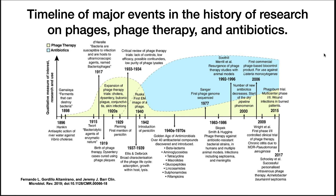I want to end this lecture talking about two interesting trends with viruses. Shown here is the timeline of major events in the history of research on phages, phage therapy, and antibiotics. Background curves represent a qualitative measure of the overall interest, research, and use of phage therapy in yellow and antibiotics in blue — showing how the introduction of antibiotics and critical review of early phage therapy studies brought phage therapy research to an almost complete standstill around the 1940s.